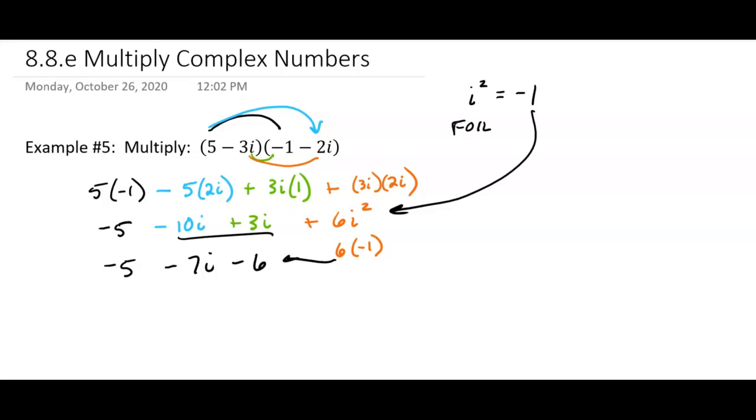Okay, now sometimes students forget that you can combine negative 5 and negative 6, those are both real numbers, and so we're going to have our final answer be in this form: negative 11 minus 7i. That's in a plus bi form, and so we're really happy.